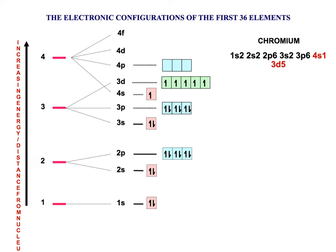It's chromium that does something strange. You would expect it to simply add one more electron to the 3D, but instead it promotes one of the 4S electrons into the 3D shell because this makes for a more stable configuration — with all those orbitals being half-filled, it creates greater stability.